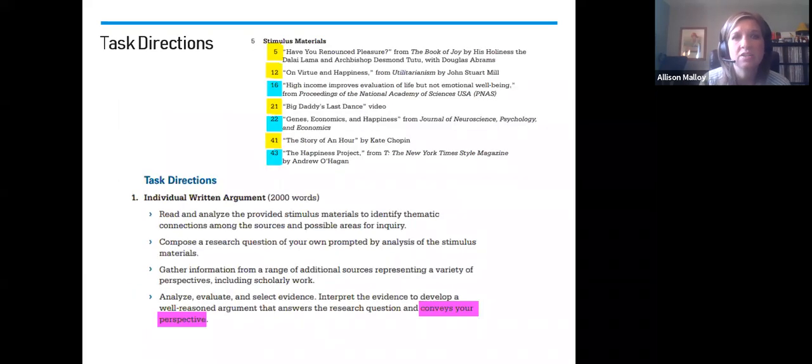Let's get into the task directions. If you have your stimulus packet handy, you can pull that out because you'll see in the beginning of the packet is the task directions. If you don't, that will be linked in the video and you can pause and go back and get that information. At the top, what you'll first notice is that there are seven stimulus sources that are referenced. The ones in yellow will be the ones we discussed further in lesson two. The ones that are in teal will be the ones that we discussed further in lesson three.